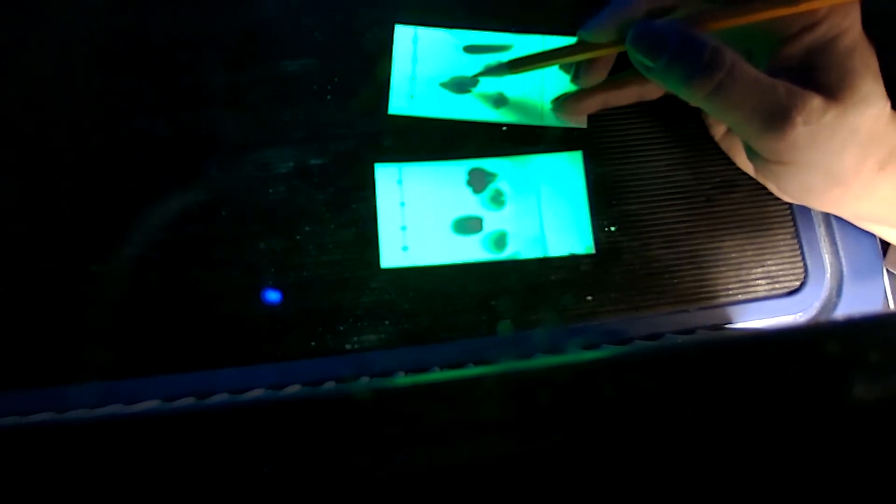Okay, now we have both plates under the UV light and you could see that, if you remember when I said we don't want like a big drop, you see when you have like a big drop it's going to show, you know, a bigger spot and it would make it harder for us to calculate or measure the distance.